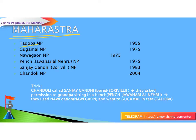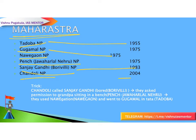Let's see the trick to remember the national parks in Maharashtra with their establishment years. Tadoba — 1955, Gugamal, Navegaon, and Pench (Jawaharlal Nehru National Park) — 1975, Sanjay Gandhi (Borivali) — 1983, and Chandoli — 2004.